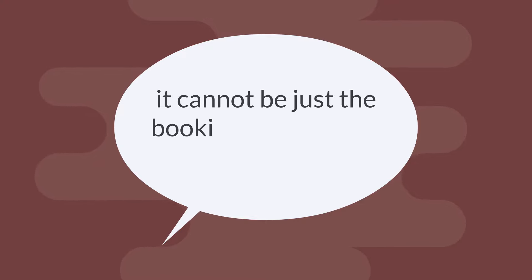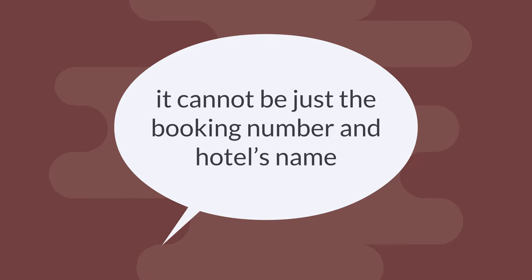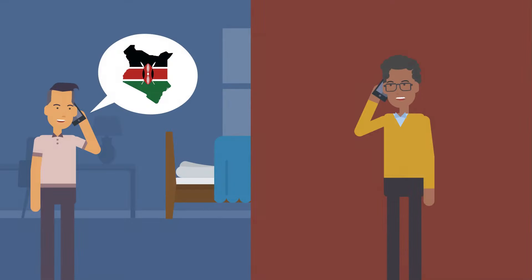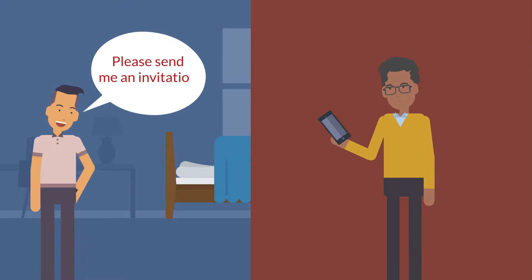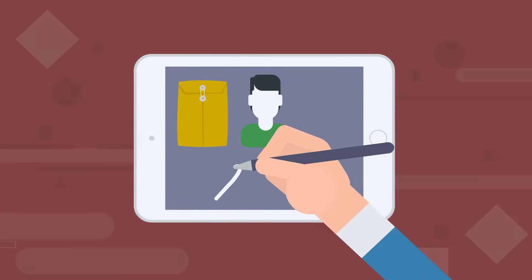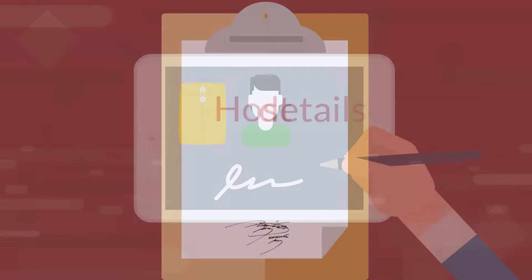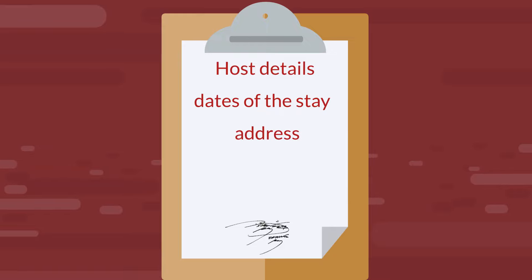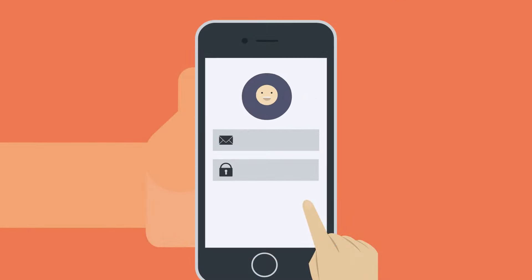If you do not have it in an electronic form, take a photo of the reservation on paper and upload it to the application. If you plan to stay with friends or family, all you need to do is attach a letter of invitation with the signature of the inviter and his or her ID card copy. The inviting letter must contain the dates of the stay, the exact address you will be staying at, telephone number, email address, and personal data of the inviter.